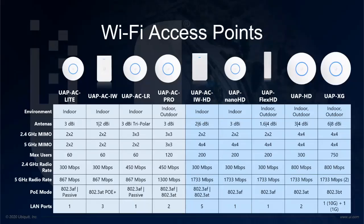For instance, if you're looking to install the AP in a wall socket, like in a hotel room, you could go with the Unify In-Wall or the In-Wall HD. If it's a crowded meeting space or an exhibition with a lot of users, you could look at something like the nano HD or the HD, which has an aggregate throughput of over 2000 and 2500 Mbps.